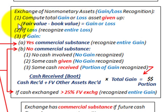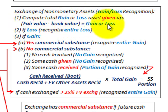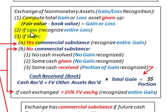You have to go through these steps when dealing with these problems. Number one, you compute if there's any total gain or loss on the asset given up. That's its fair value less the book value — that determines if there's any gain or loss. In our example, we're going to have a gain on this exchange.